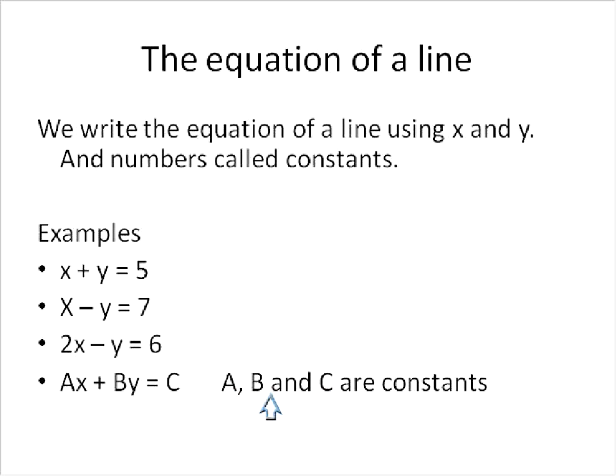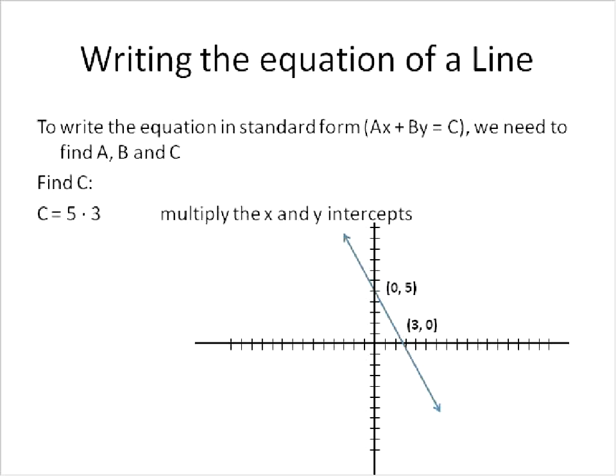We just call these A, B, and C variables, and they're just constants that don't change. Whereas x and y change because every single point along the line is an x value and a y value. So those may change, but the A, B, and C will stay the same as we write the equation of the line.